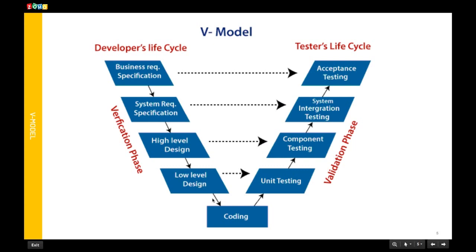By looking at the Low-Level Design document, the developer can code according to the syntax and then execute it. Once development is completed, we have to do unit testing — not testing the whole application, but testing small pieces: functions or particular classes, testing the small units.